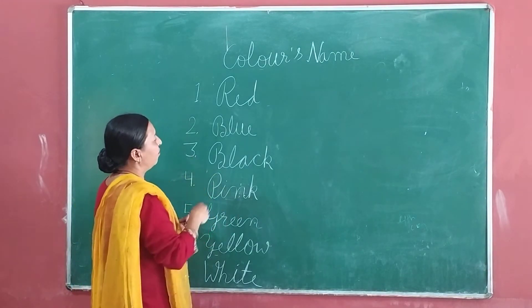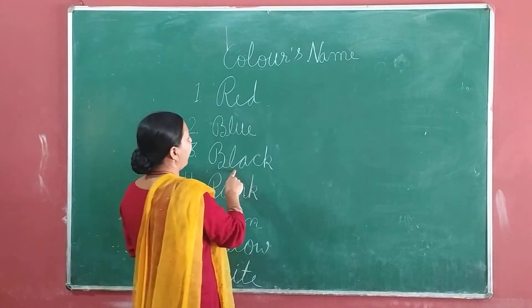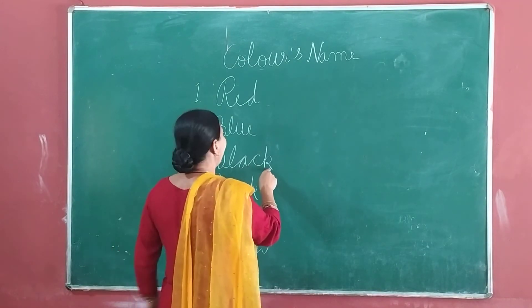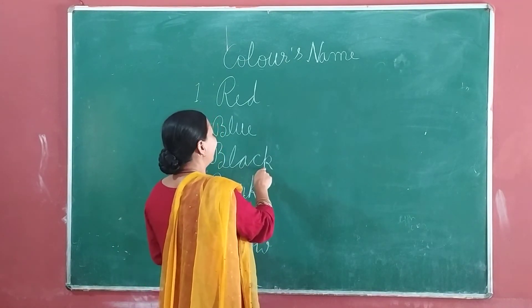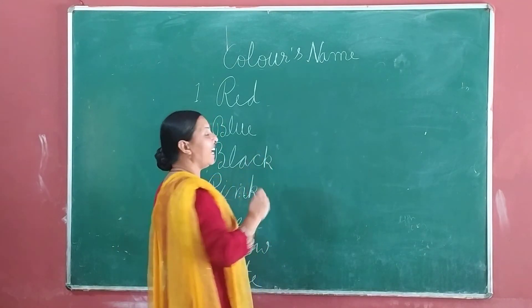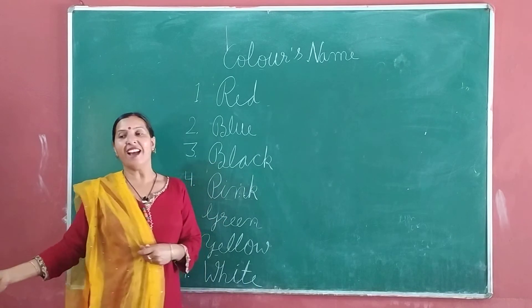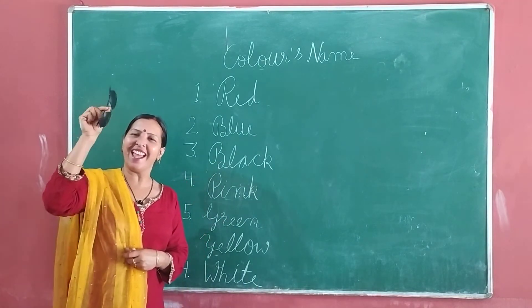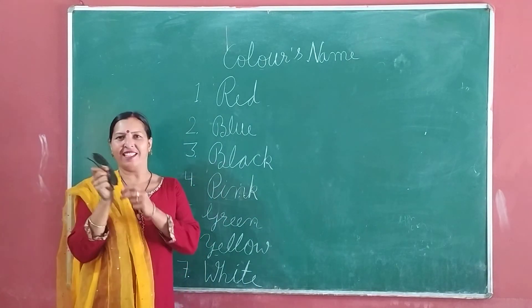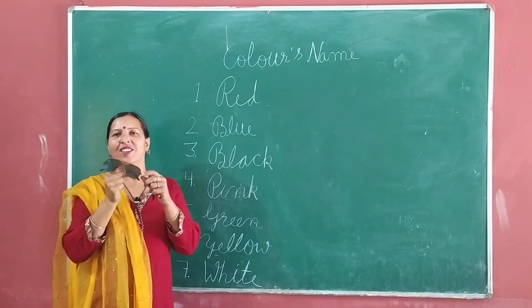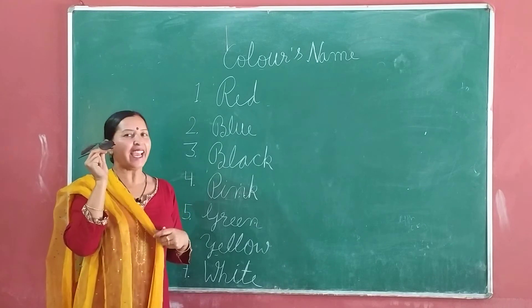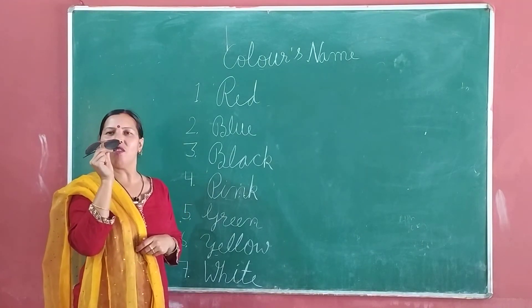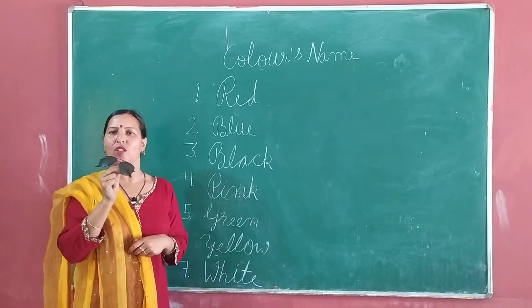Third, V-L-A-C-K. Black. Black means Kala. So you can pick up which colour is Black. This is a Black. Okay.